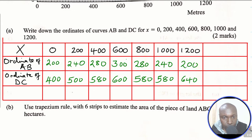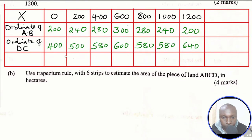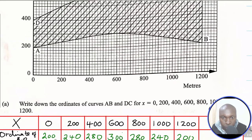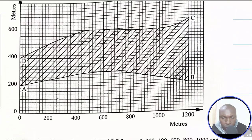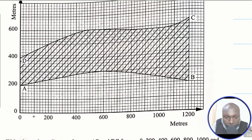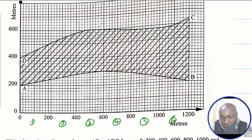Now we move to part (b): use the trapezium rule with 6 strips to estimate the area of piece of land ABCD in hectares. Looking at the intervals from 0 to 200, 200 to 400, and so on, we confirm there are exactly 6 strips — strip one through strip six.